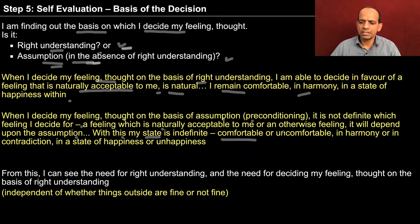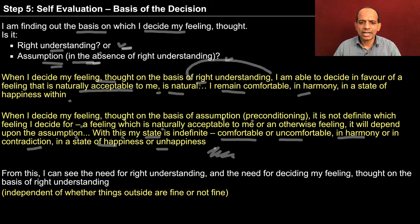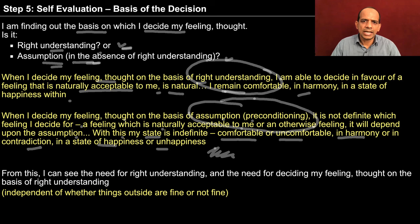I am comfortable sometimes, uncomfortable sometimes, in harmony sometimes, in contradiction sometimes — sometimes happy, sometimes unhappy. So this kind of indefiniteness will be there. If the basis is right understanding, I will always be comfortable. If it is on the basis of some assumption, it is not definite. If the assumption is right, I may become comfortable; if the assumption is wrong, I become uncomfortable. But ultimately it is me who is deciding the feeling, and this basis is again there in me only — it is not something outside. It is me who is going to have the right understanding, or me who is going to assume something otherwise.